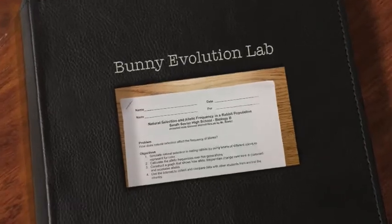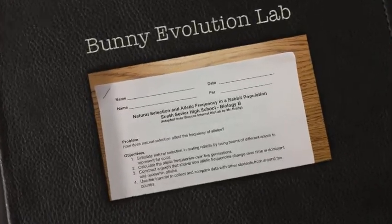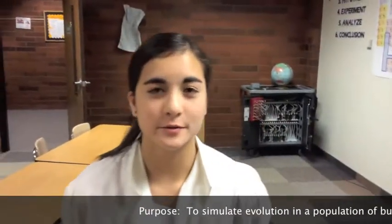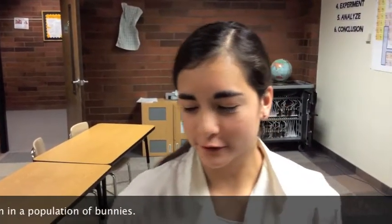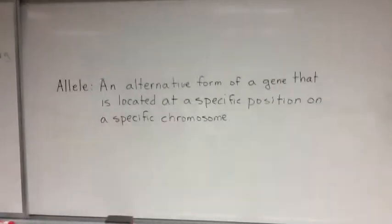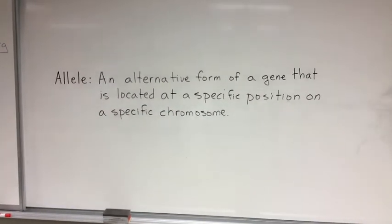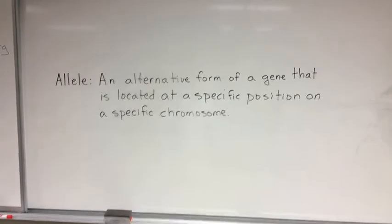Today's lab is natural selection and allelic frequency in a rabbit population. The purpose of today's lab is to simulate evolution in a population. Let's first start off by talking about what an allele is. An allele is an alternate form of a gene that is located at a specific position on a specific chromosome.